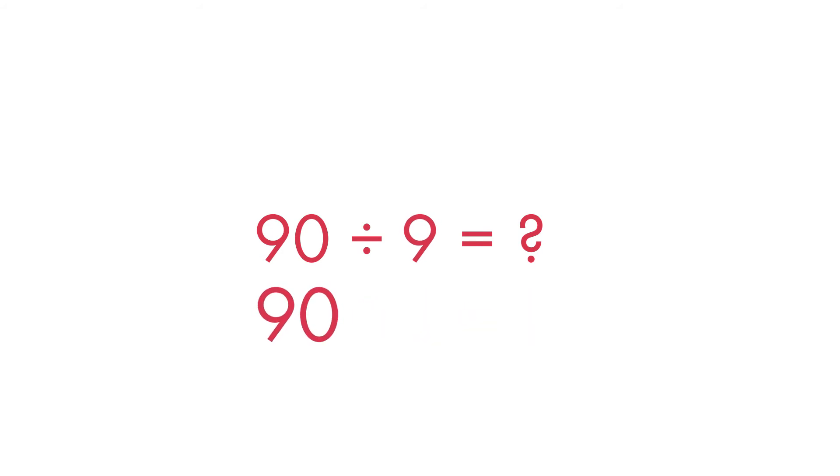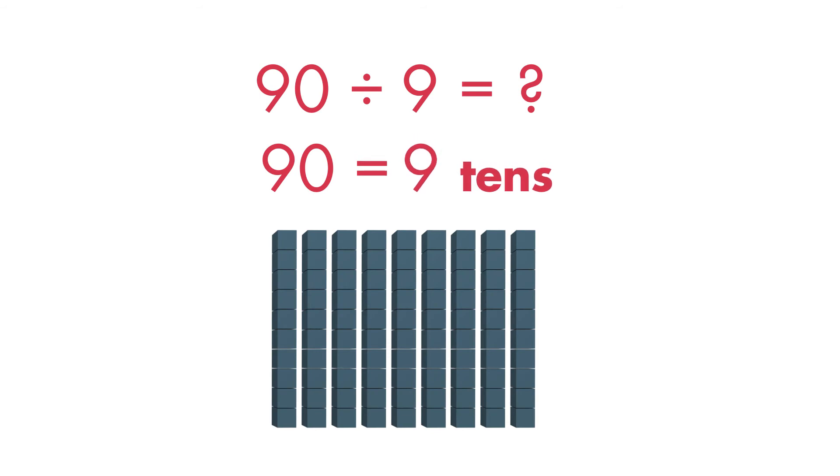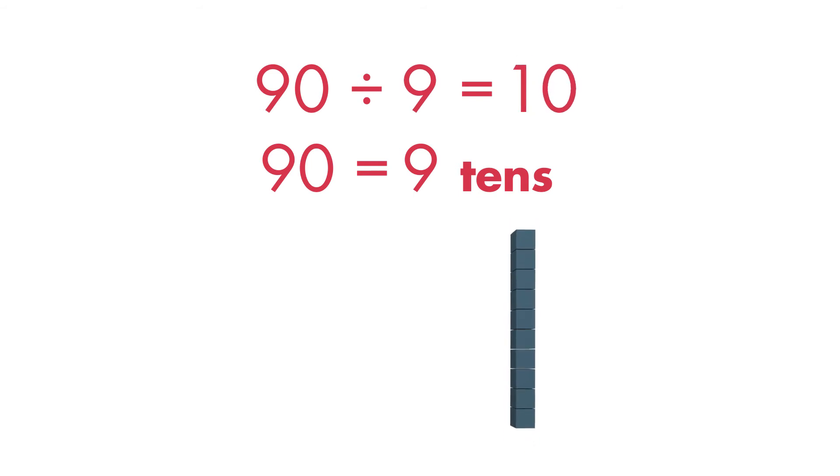90 is equal to 9 tens, so 9 tens divided by 9 is equal to 1 ten, or 10.